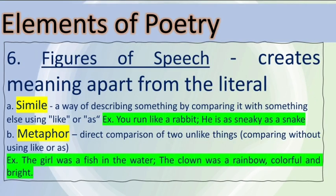The next element of poetry is figures of speech. We all know that these create meaning apart from the literal meaning used in everyday life. Number one is simile — it is a way of describing something by comparing it with something else using 'like' or 'as.' Examples: 'You run like a rabbit.' 'He is as sneaky as a snake.' Number two is metaphor — it is a direct comparison of two unlike things, comparing without using 'like' or 'as.' Examples: 'The girl was a fish in the water.' 'The clown was a rainbow, colorful and bright.'